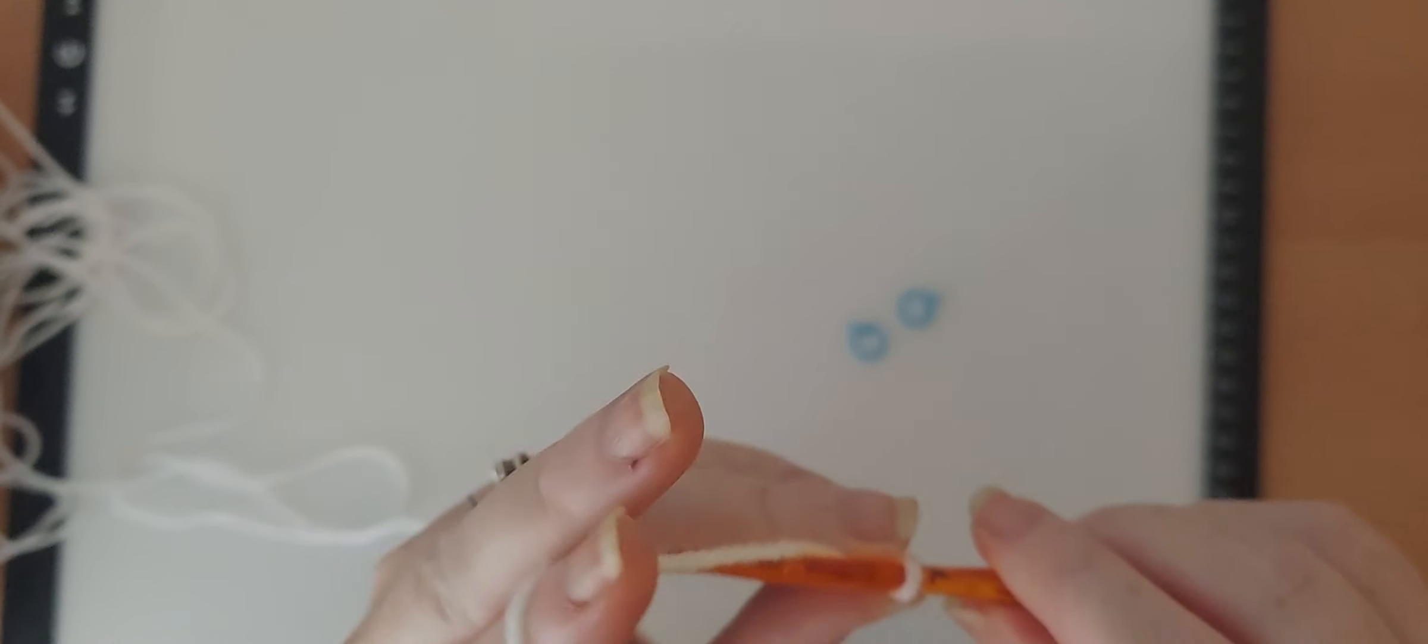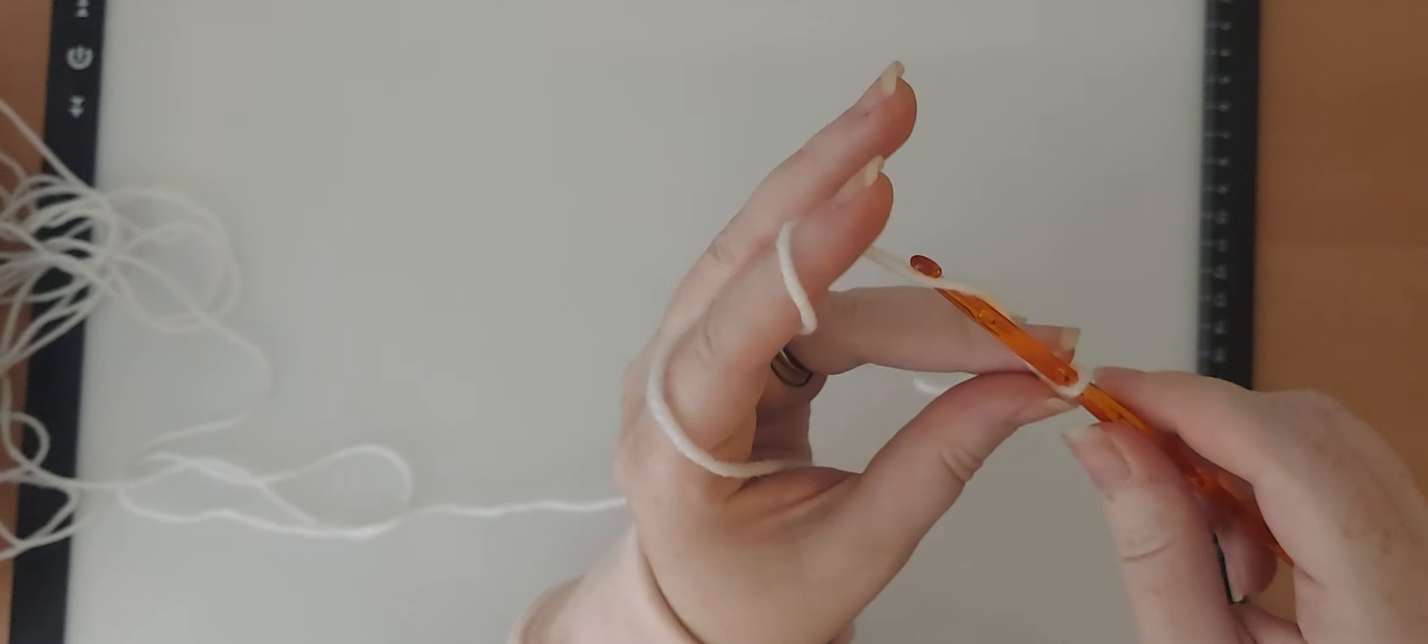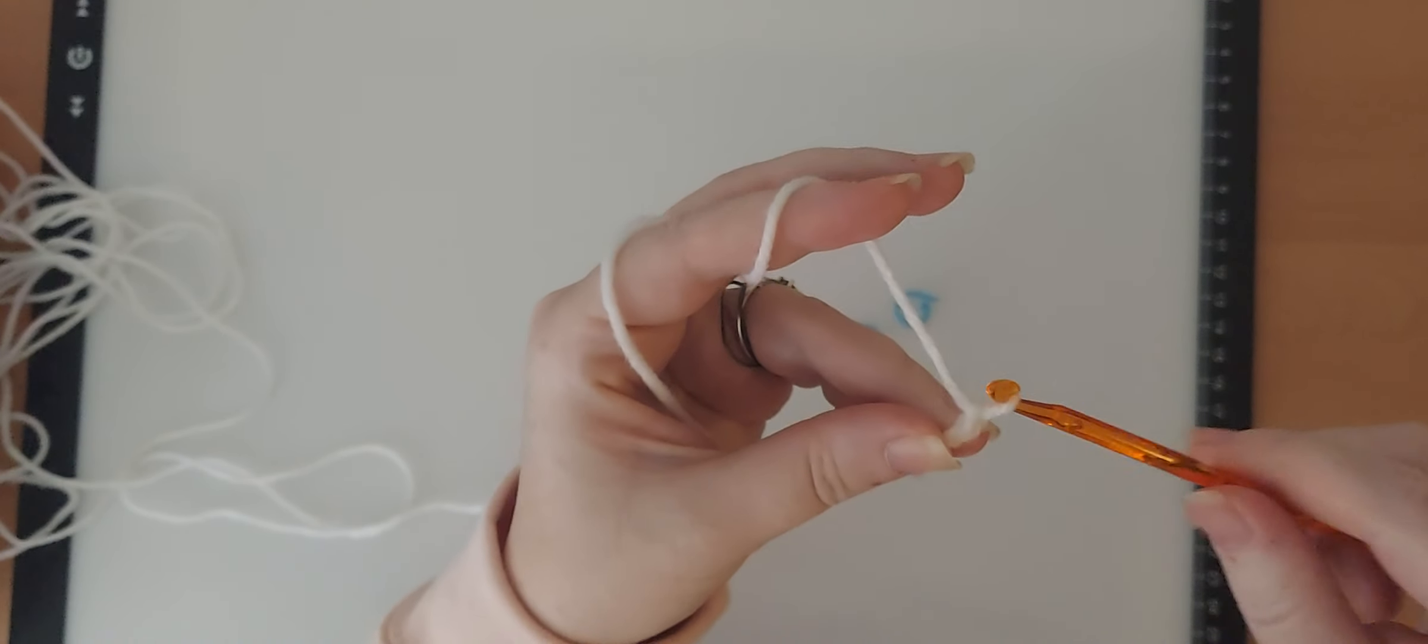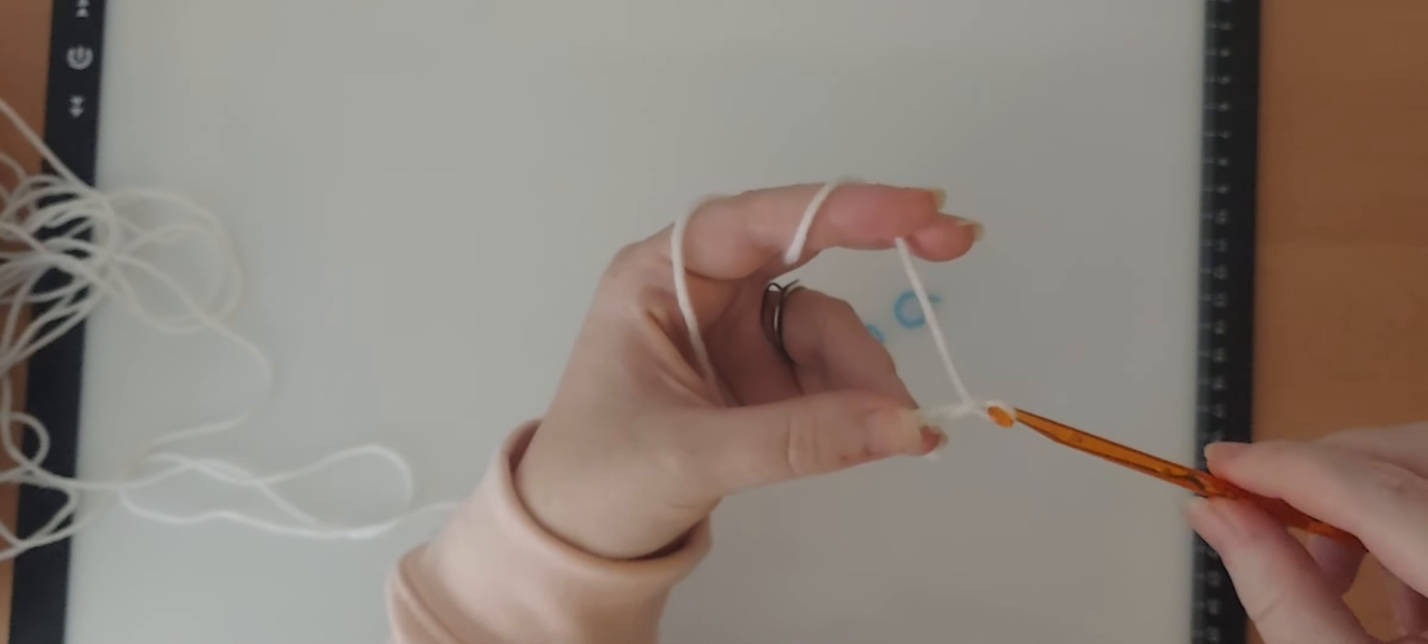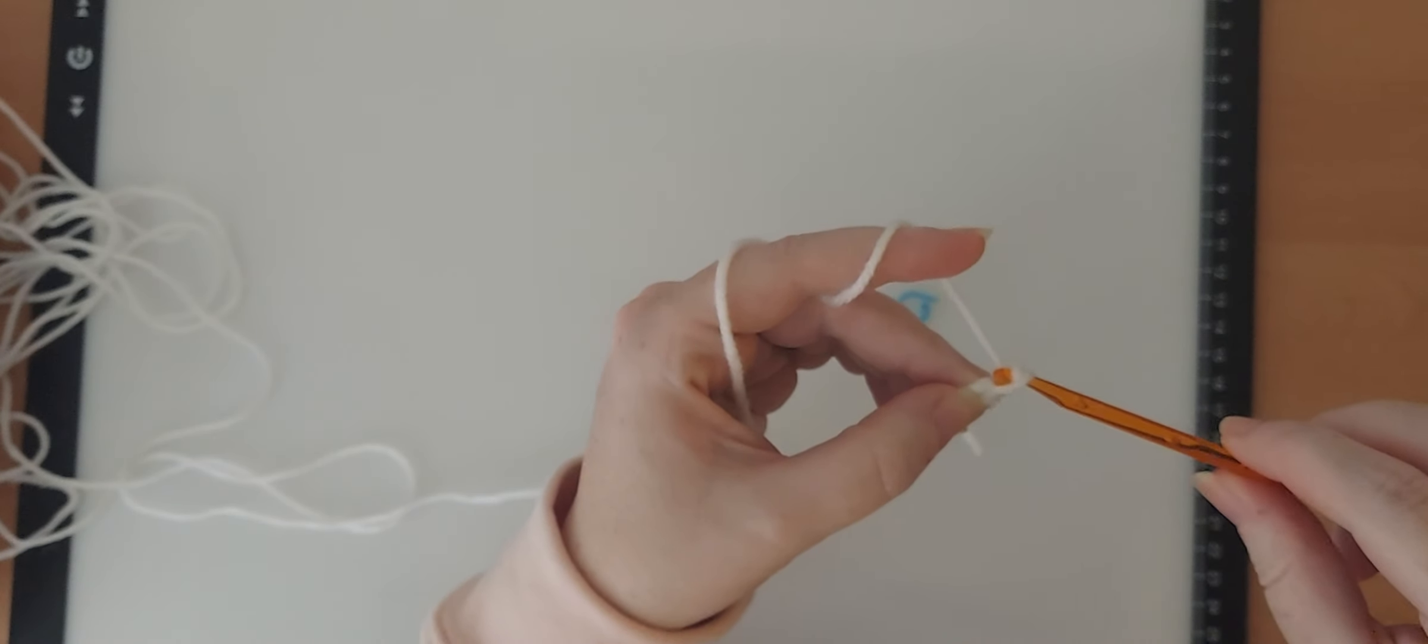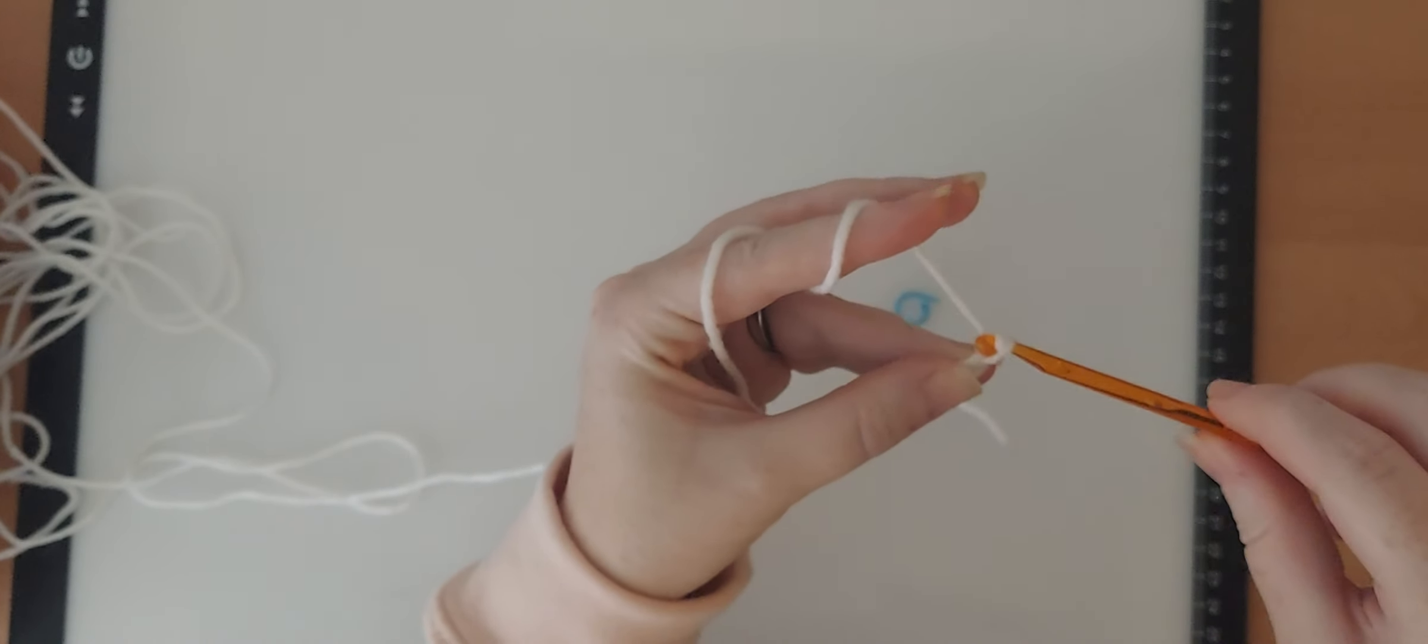You're going to take your hook, grab the yarn, and pull it through just like that. That's one chain. So I'm going to do it again: one, two, three, four, five.